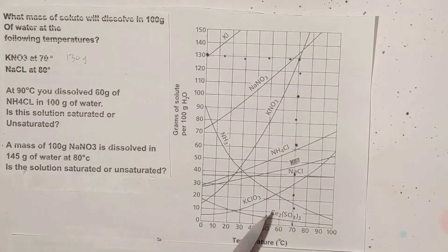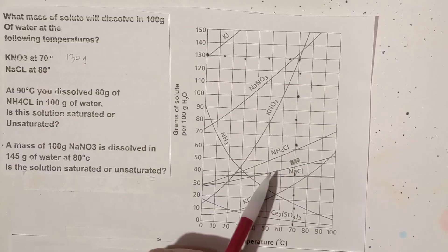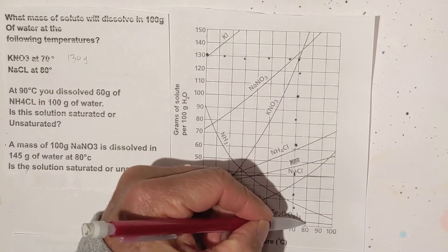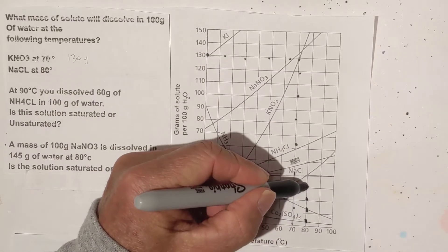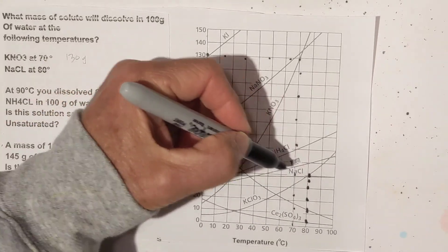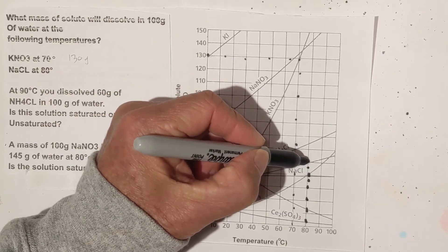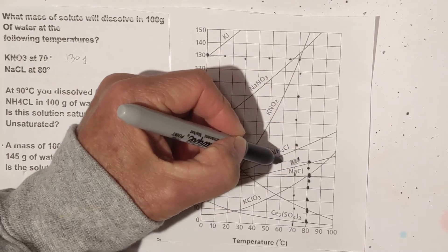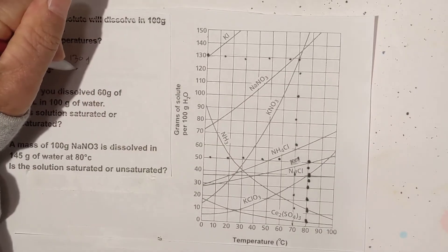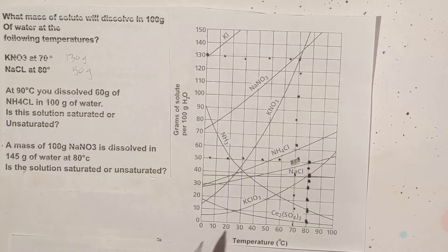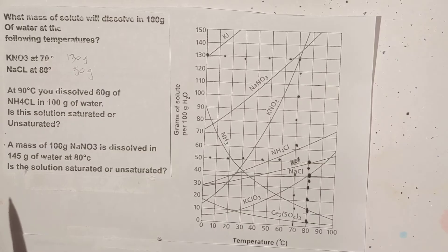Let's work another example. We have NaCl, so NaCl is right here, this line. We have 80 degrees, so this time I'm not going to use a ruler, I'm just going to move up and let's see where it intersects. It intersects right here and then if we move over, it is 50 grams. It doesn't always line up exactly on the number, sometimes it'll be in between and you have to just do the best you can.